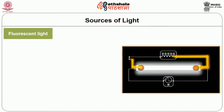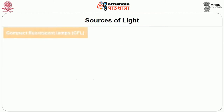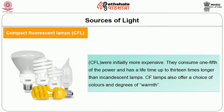Fluorescent light: In a fluorescent lamp, light is produced by an arc between two electrodes inside a glass tube filled with very low pressure mercury vapor. The arc or discharge produces ultraviolet invisible radiations that excite or activate the lamp. The phosphorous fluorescence glows convert the ultraviolet energy into visible light energy. Fluorescent light is a relatively shadowless, even light, making it ideal for general lighting of environments where task lighting would be impractical or undesirable. Compact fluorescent lamps (CFL bulbs) were initially more expensive, but consume one fifth of the power and have a lifetime up to 13 times longer than incandescent lamps.